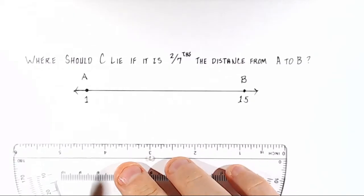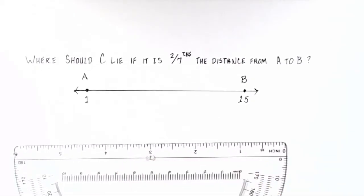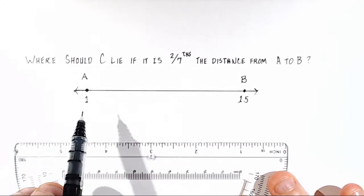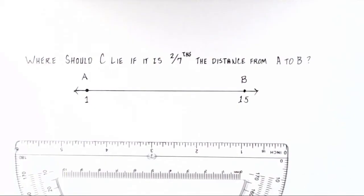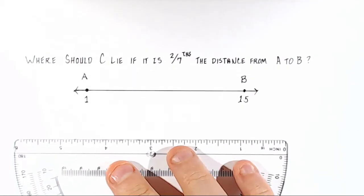Here's how we find the answer to this problem. First, we need to know the distance between A and B, the absolute distance. And then we just need to take two-sevenths of that value. It's really not all that hard.